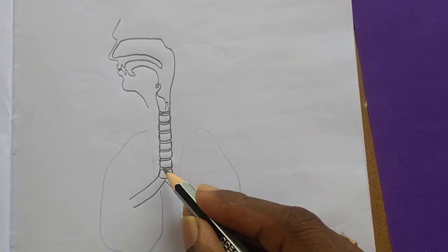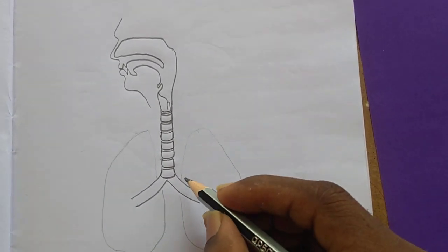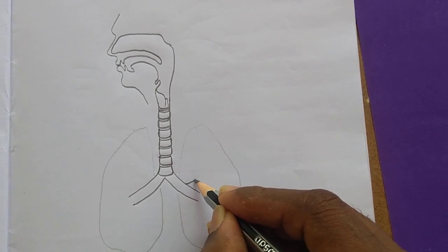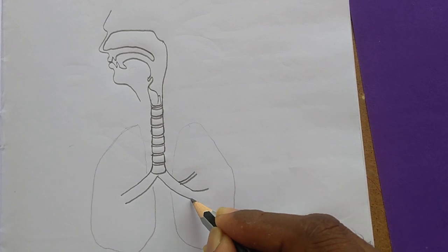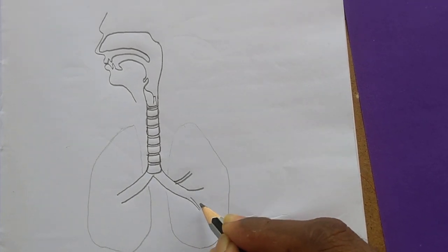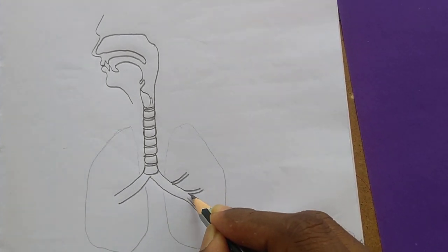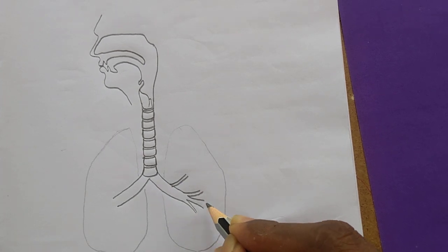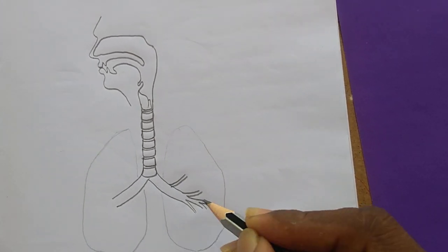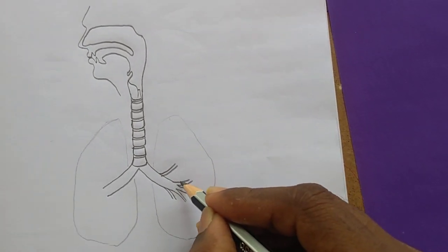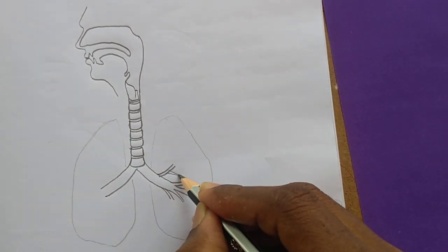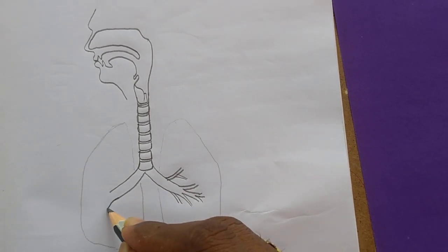...bronchi. These two branches we call them as bronchi. We have to draw a number of bronchioles, small branches. We can draw as many as possible in this particular area—small branches you have to draw.